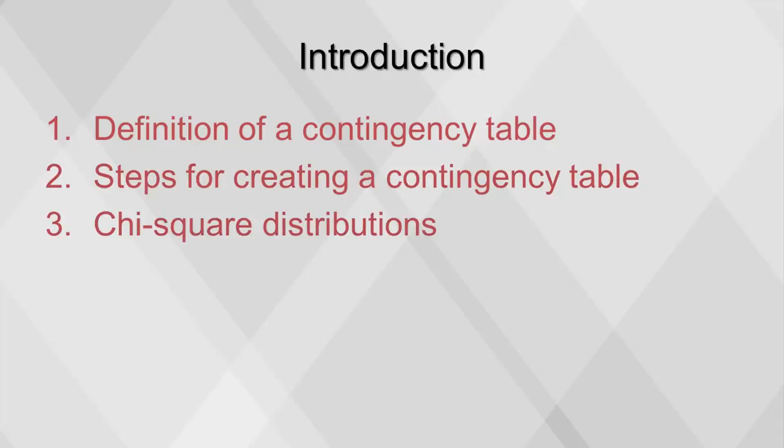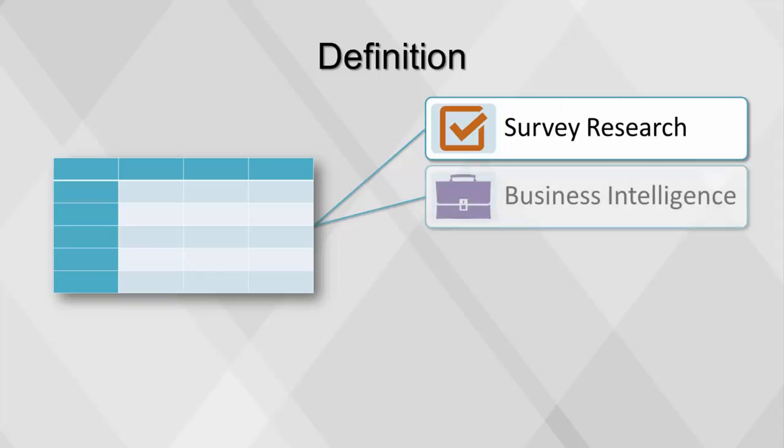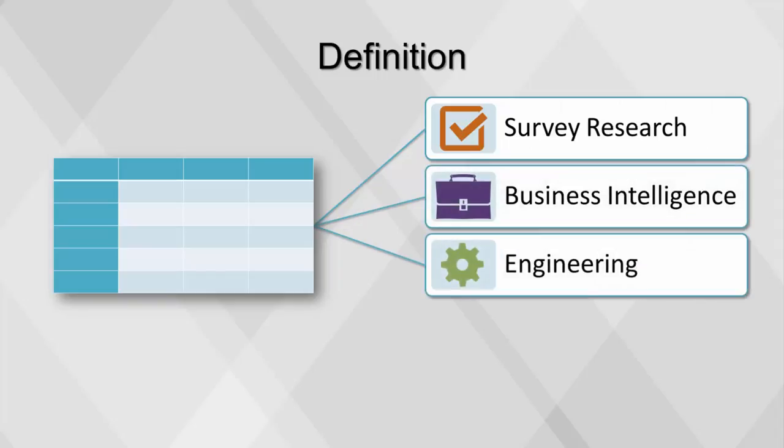In statistics, a contingency table is a type of table in a matrix format that displays the multivariate frequency distribution of variables. Contingency tables are heavily used in survey research, business intelligence, engineering, and scientific research.